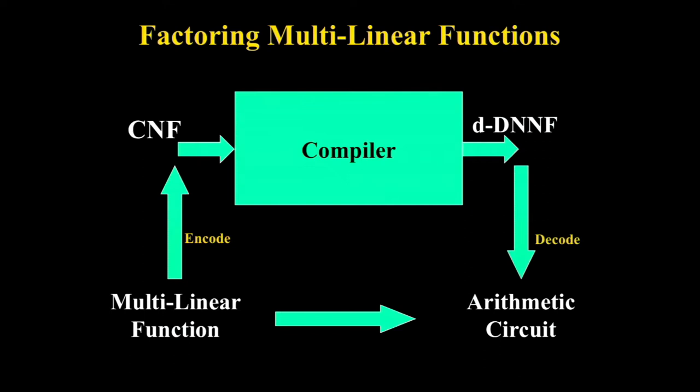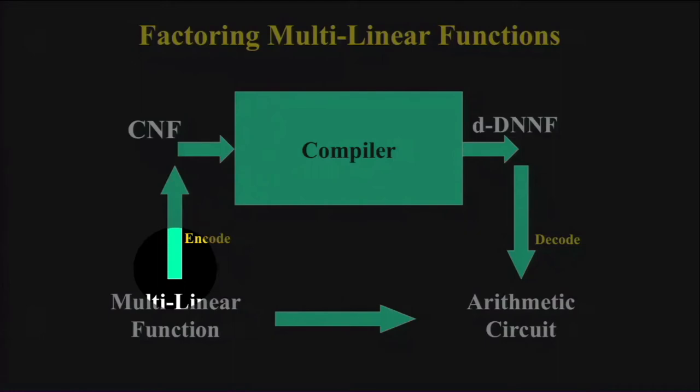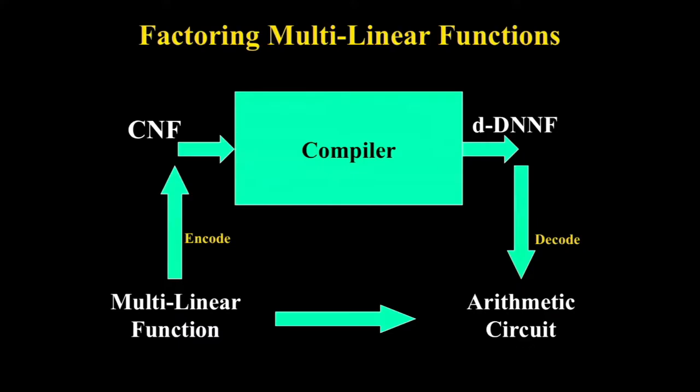The real reduction is: take the multilinear function, encode it as a CNF; run the logic box to get a Boolean circuit; then extract the arithmetic circuit from it. These two steps — encode and decode — are straightforward. We'll see the encode and decode steps today, but not the compilation step inside the box.